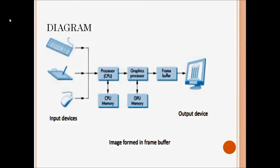Next, the data present in the graphics processor is passed into the frame buffer. The data in the frame buffer is then converted into pixel representation, and those pixels are displayed using an output device. Now I am going to explain the components in detail.